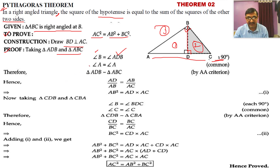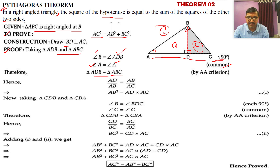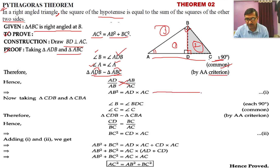Angle A is common in both triangles — angle A for ADB and angle A for ABC. So if two triangles are similar by the AAA criterion, their corresponding sides are in the same ratio. We take: AD/AB = AB/AC. Cross multiplying: AB² = AD × AC. This is equation number one.